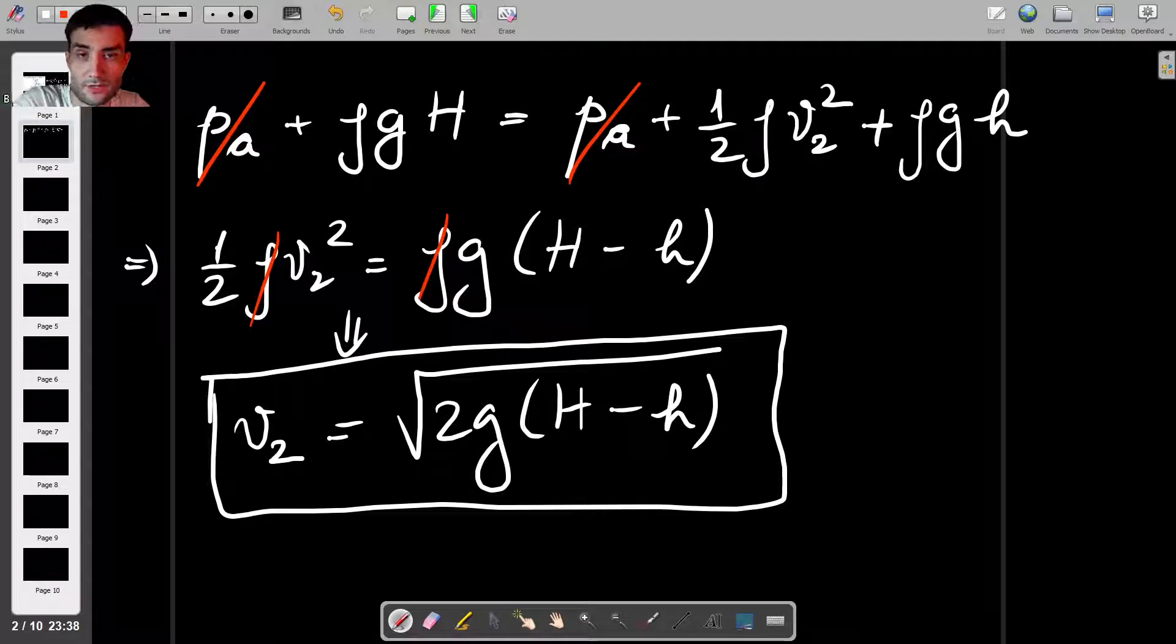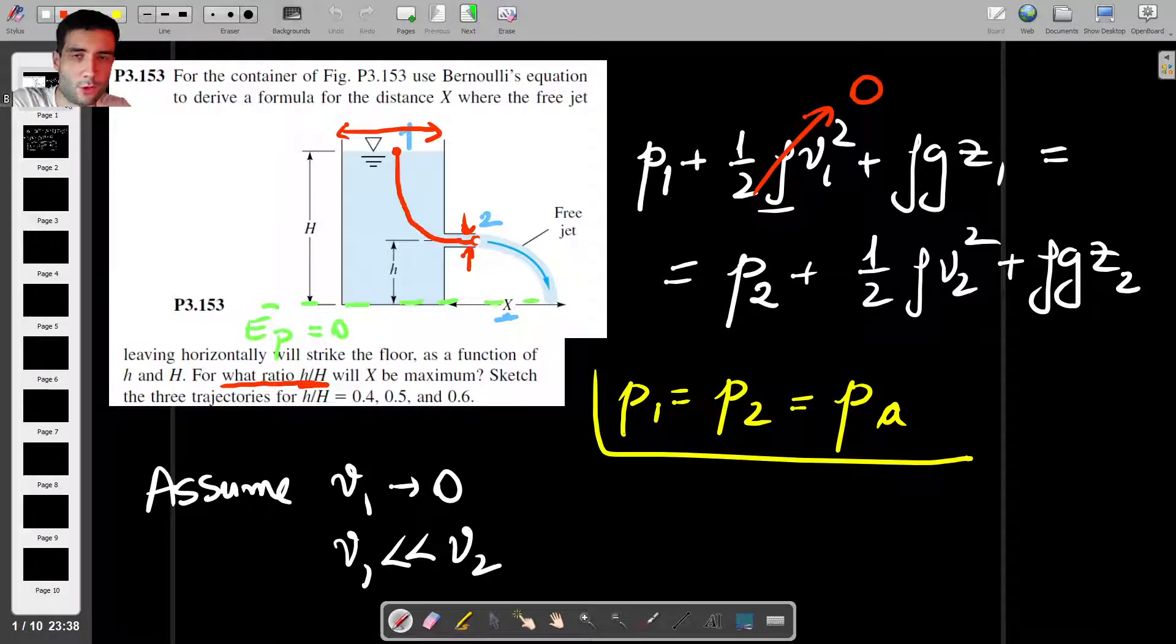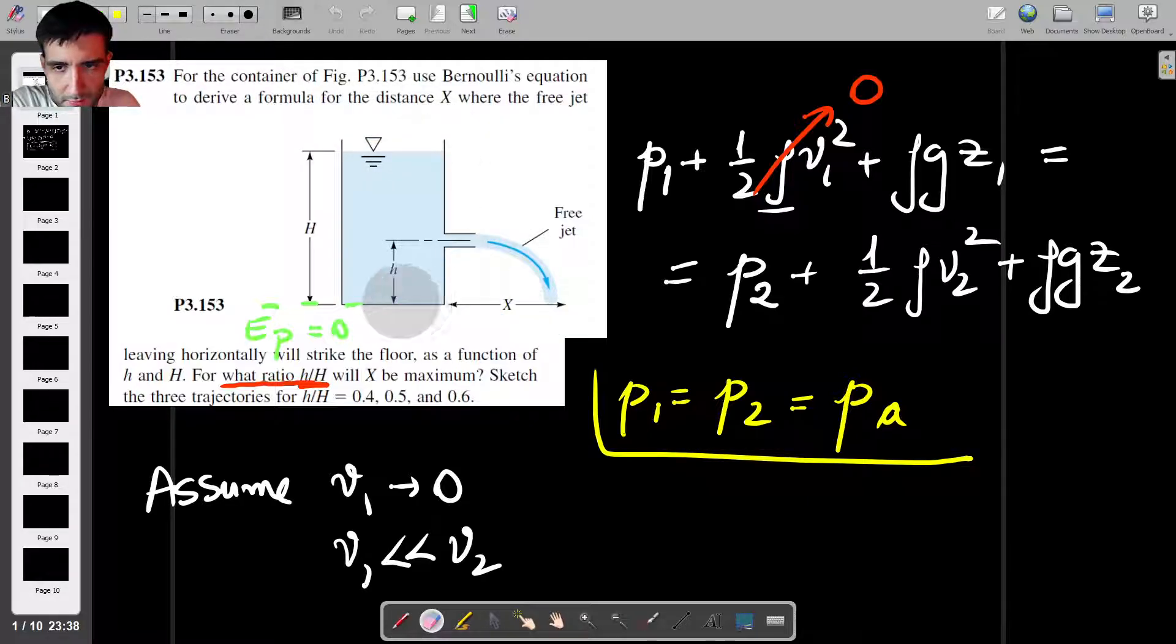I just rearrange this to get the velocity by itself. We can cancel out the rhos, which will finally give us that V2 will be equal to square root of 2G times H minus h. That's so far so good. So we found the velocity the water has when it leaves the tank.